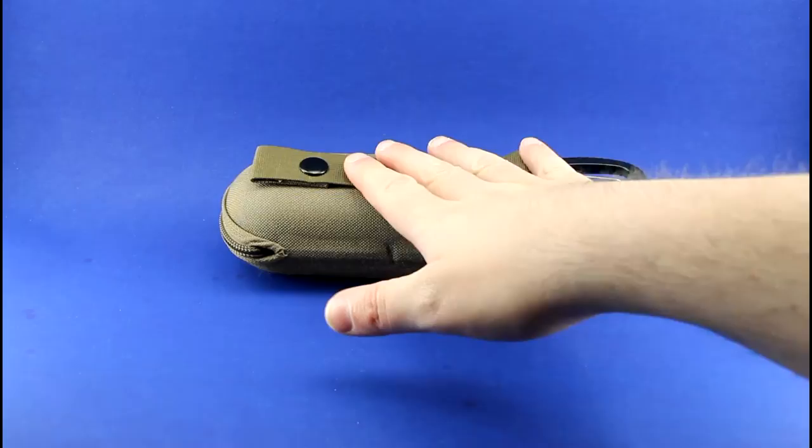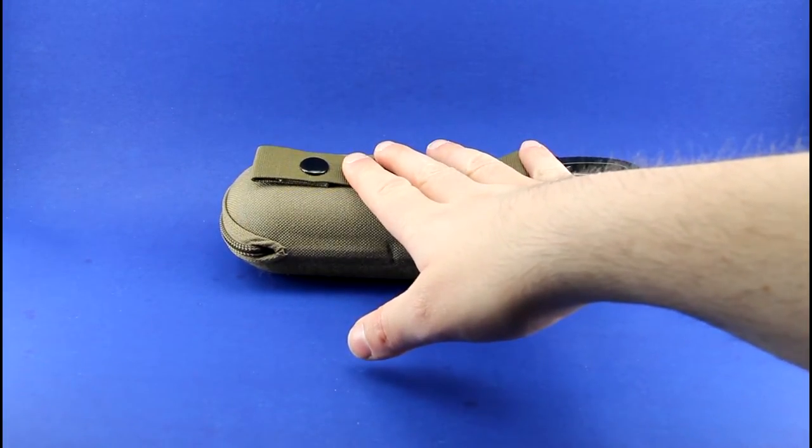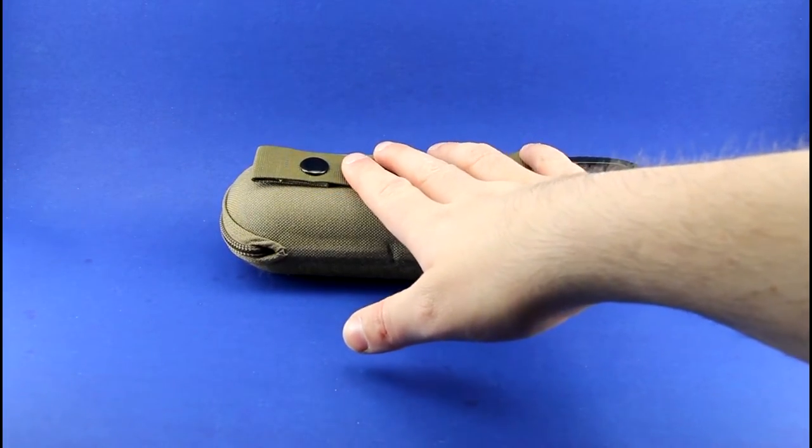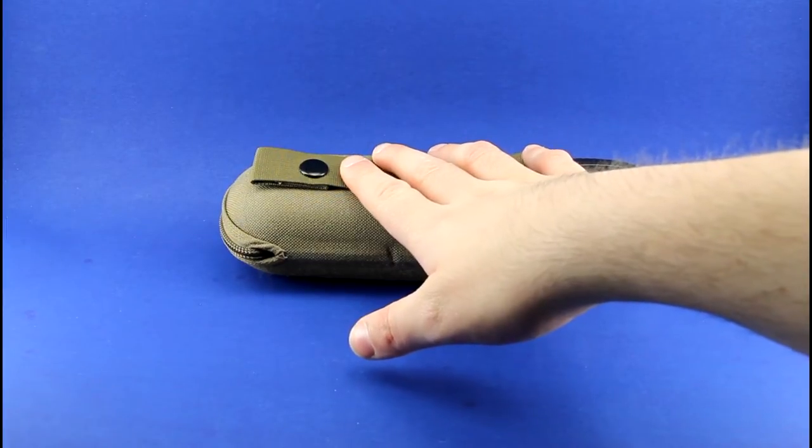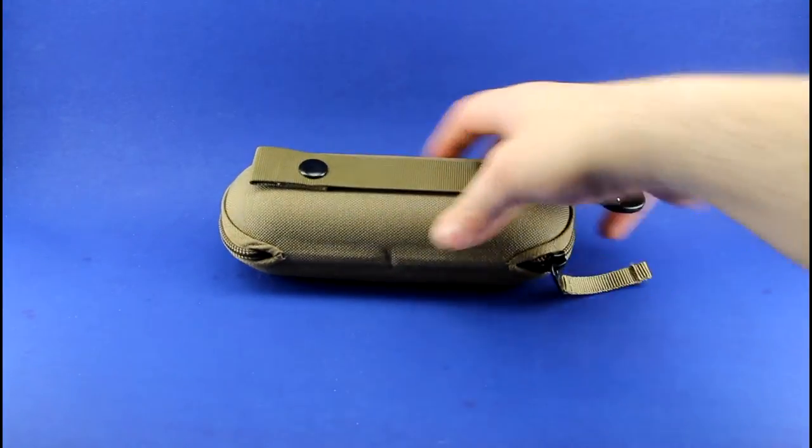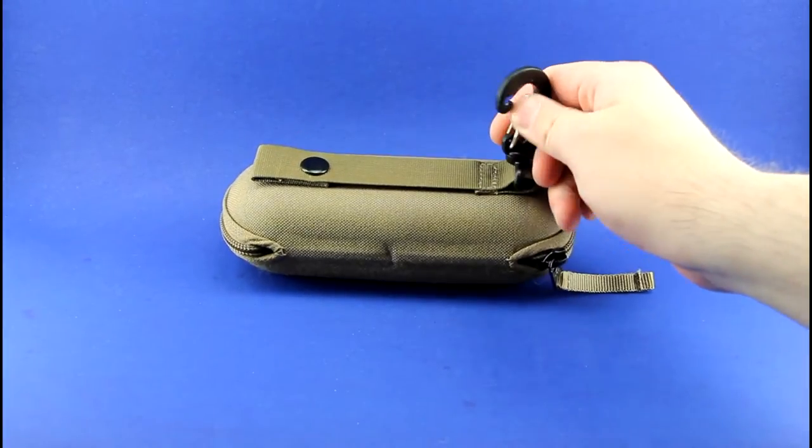I'd only worry about the snap if you bump into a lot of things, so if you keep the sunglass case on the side of a pouch, it may bump into more things than if you keep it on the back. However, the clip keeps it perfectly secure.